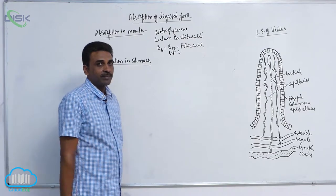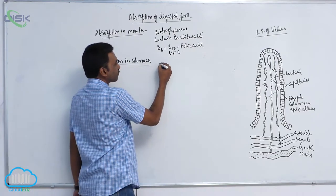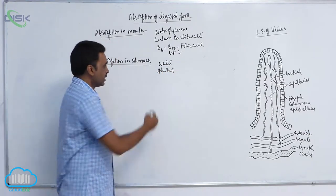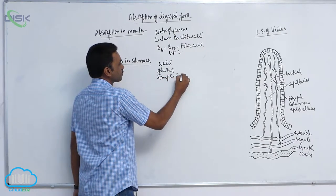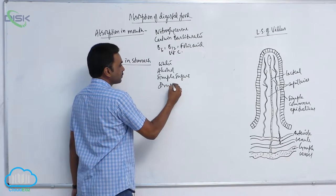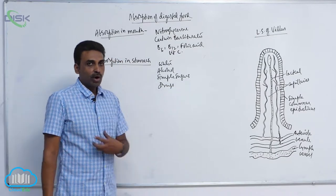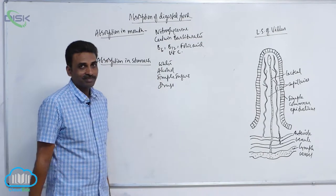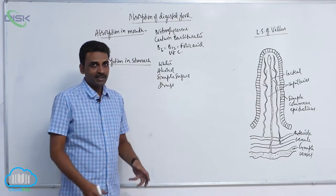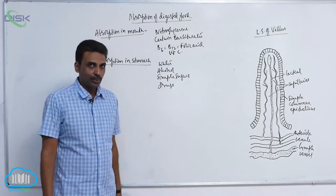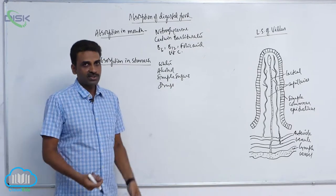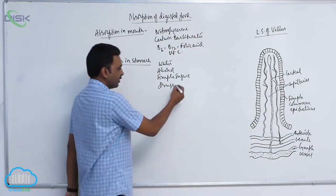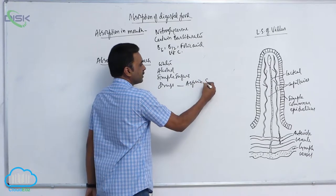Absorption in the stomach: certain substances are absorbed through the wall of the stomach. These include water, alcohol, and simple sugars like glucose and fructose. Certain drugs are also absorbed in the stomach, such as aspirin and salicylic acid.